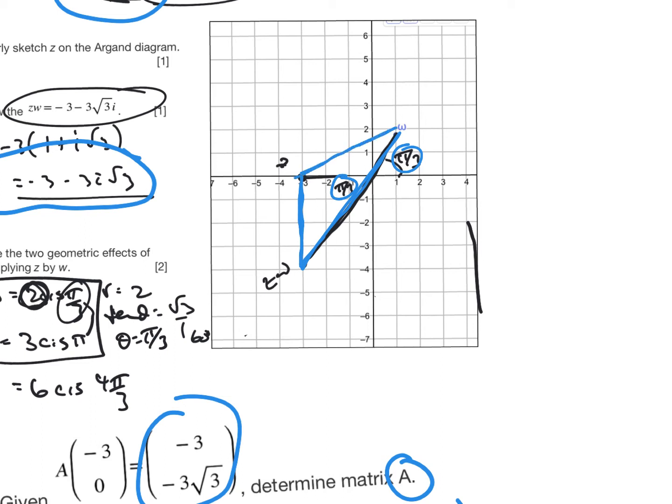So I know that this distance here, I know this point is over 3 and down 3 root 3. I also know that this distance here is going to be 2, and I know that from the complex number w.